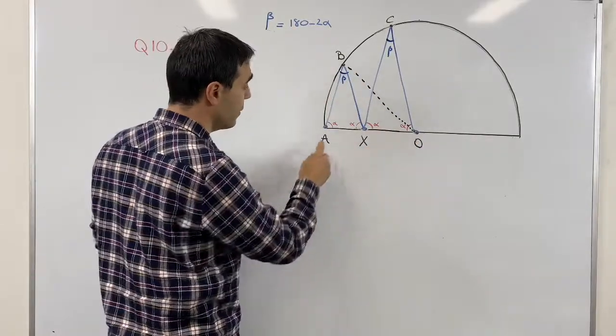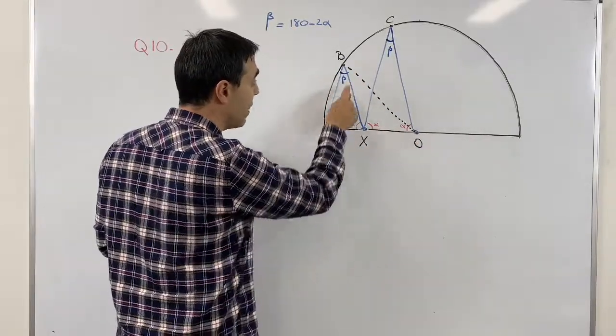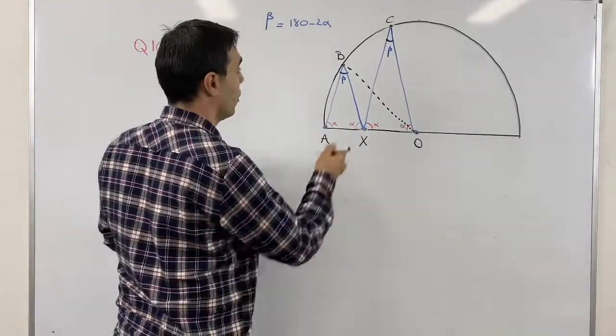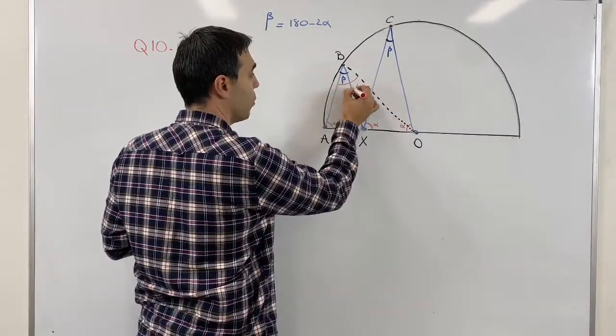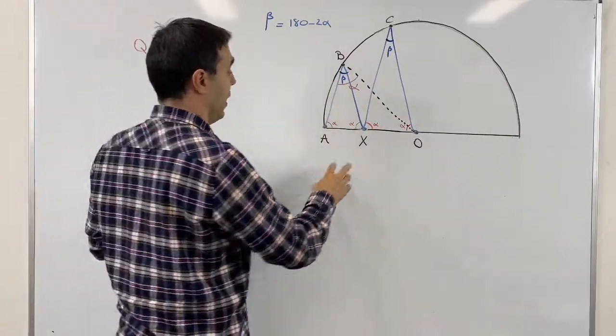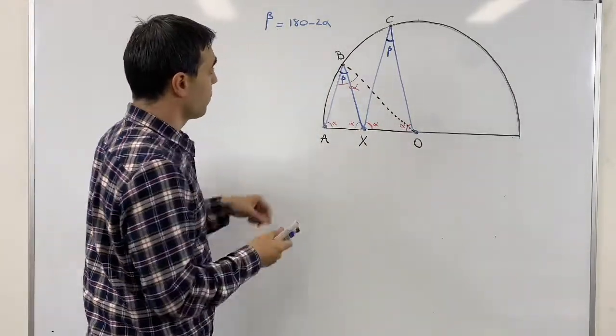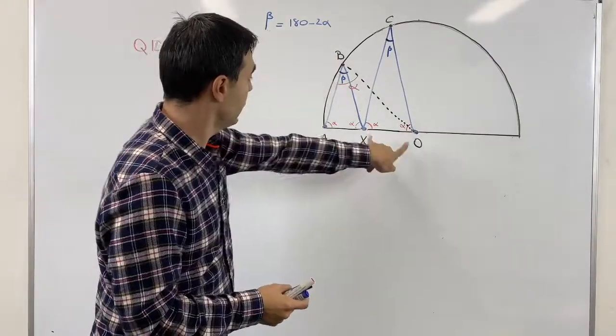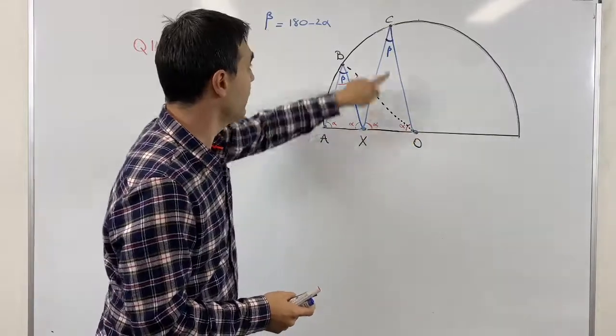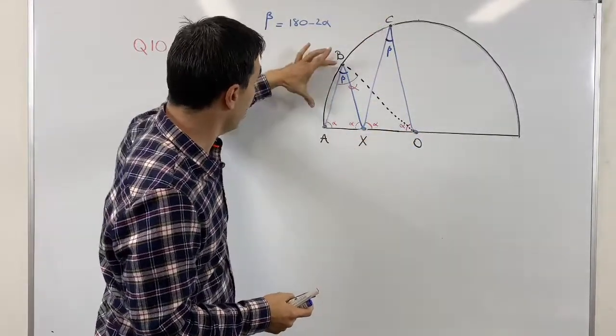Now when OBA is isosceles, when this angle is alpha, definitely this angle should also be alpha. So we know this is alpha. Another thing we know is let's try to see OX, which is base of COX, and BA, which is base of OBA.